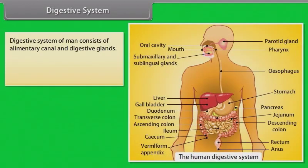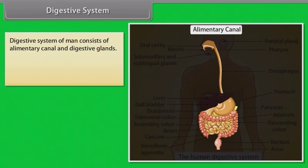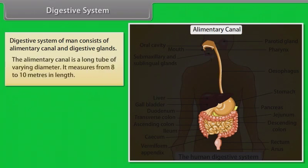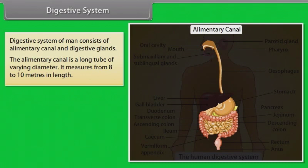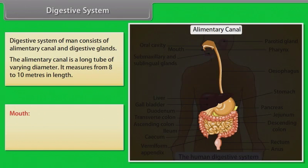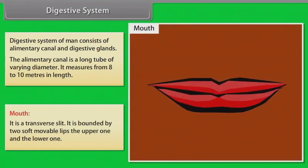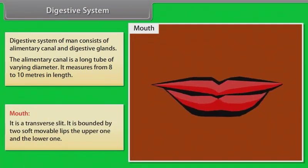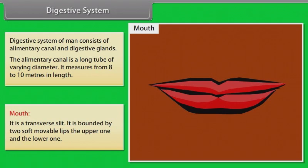The digestive system of a human consists of the alimentary canal and digestive glands. The alimentary canal is a long tube of varying diameter, measuring 8 to 10 meters in length. The first part of the alimentary canal is the mouth, which is a transverse slit bounded by two soft movable lips — the upper one and the lower one.